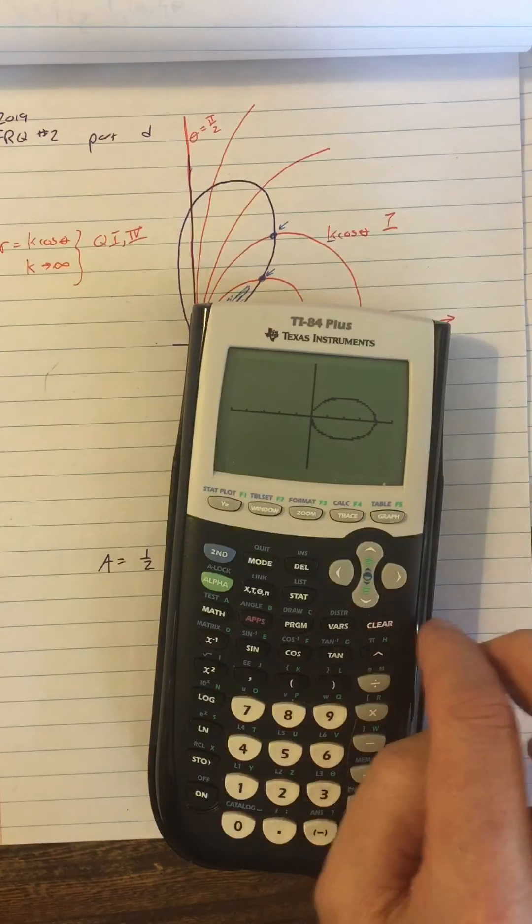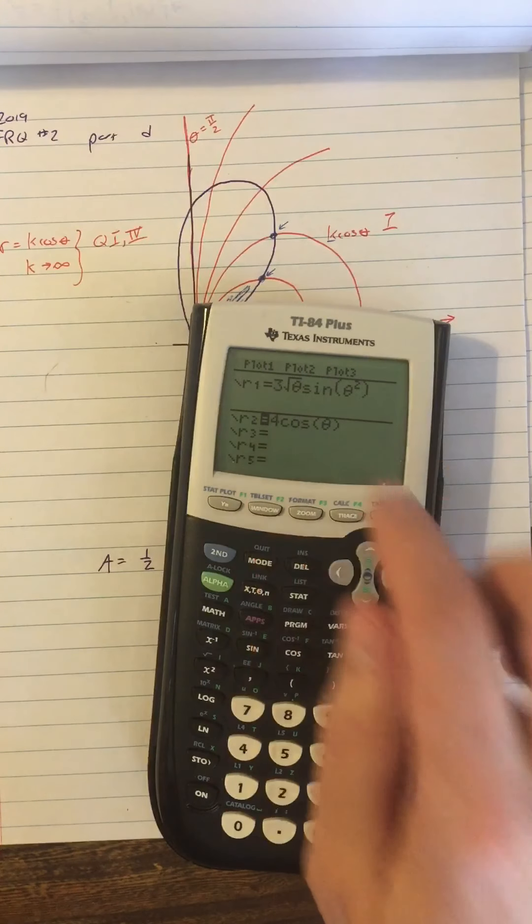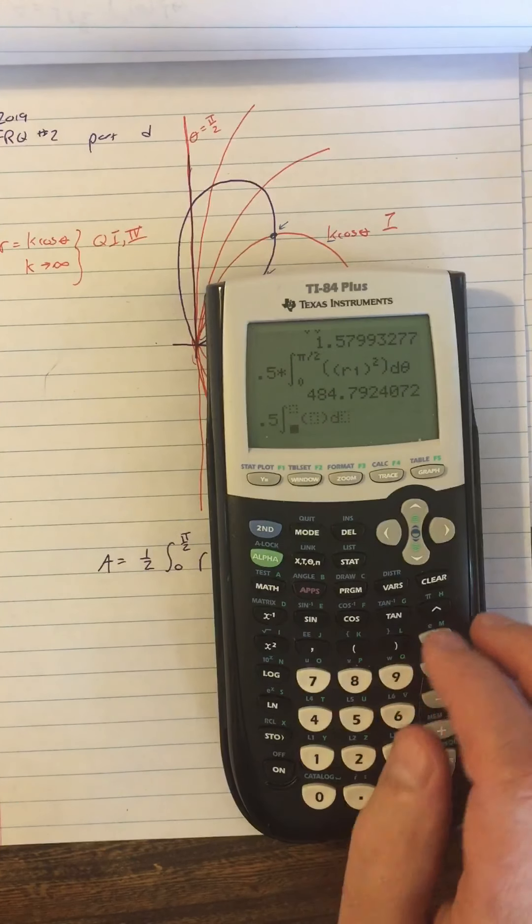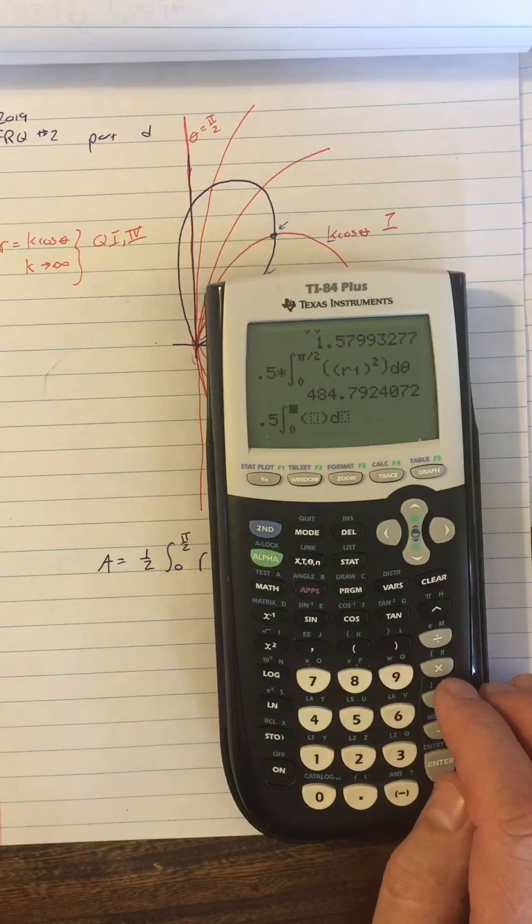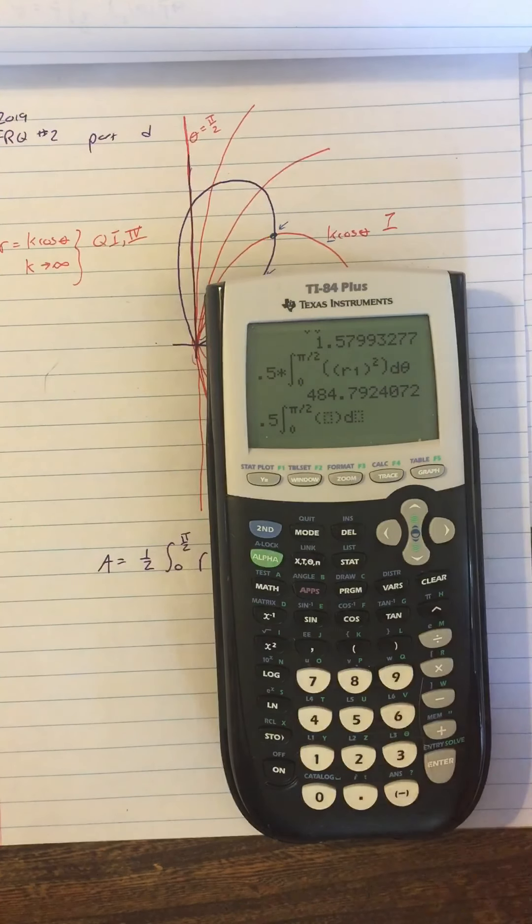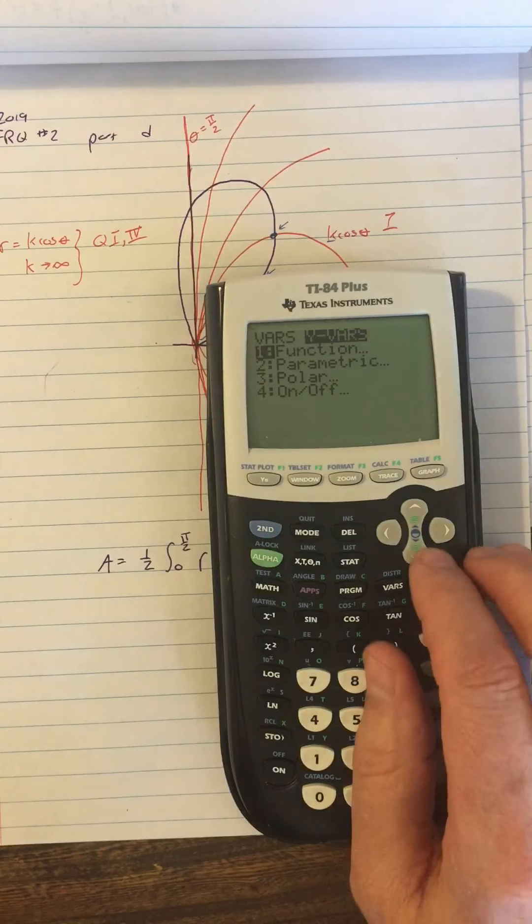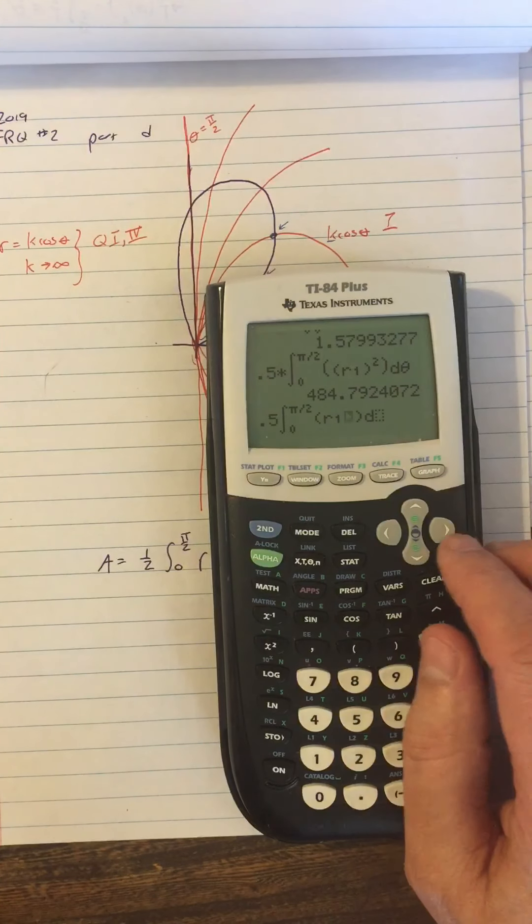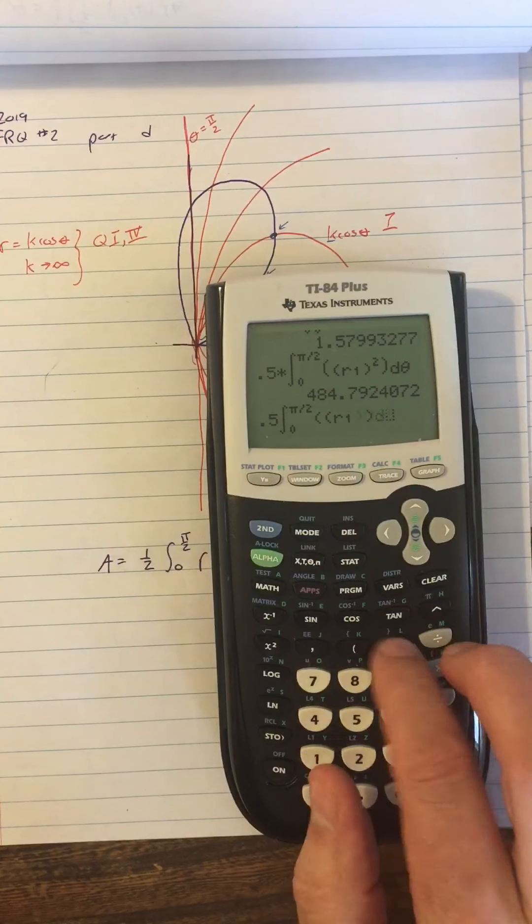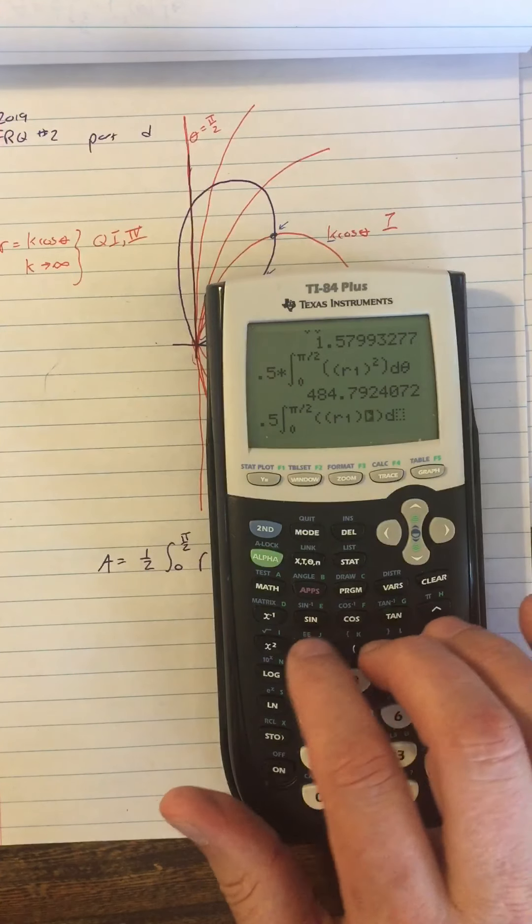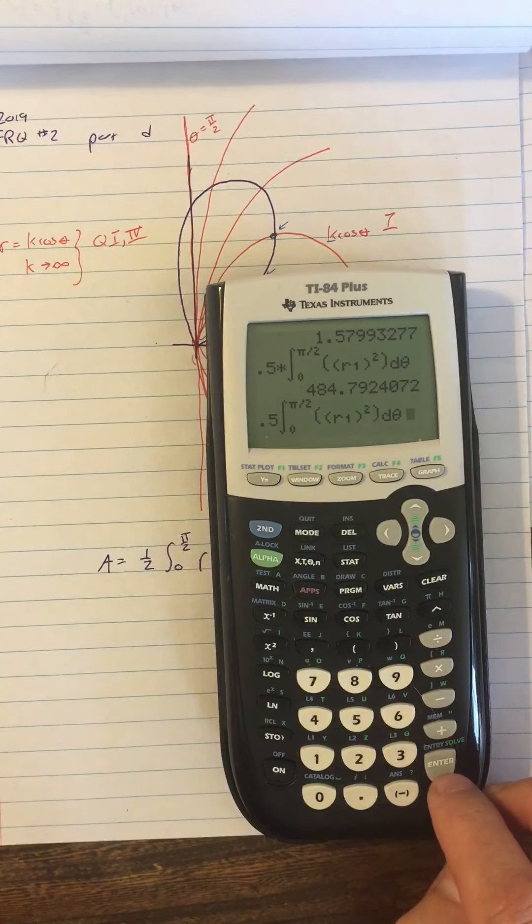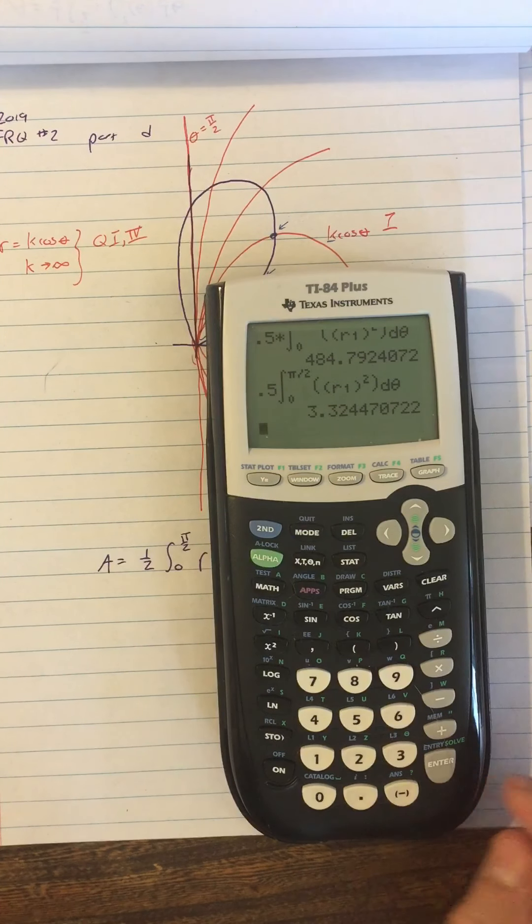All right, so now remembering that I have in my y window, I have r, so let's go and put 0.5 times math 9 for the integral will go zero to pi over two. I guess I could have copied down one of my earlier versions, but I don't know if I even still have them. But I still can use r1, so we're going to go variables, y variables, polar r1, and I'm not going to forget to square it this time. So I'm going to insert an open parentheses, and then over here I'm going to insert an open parentheses and a square. And then I'm going to do d theta. So that looks good, so now I'm going to hit enter, and I get 3.324.